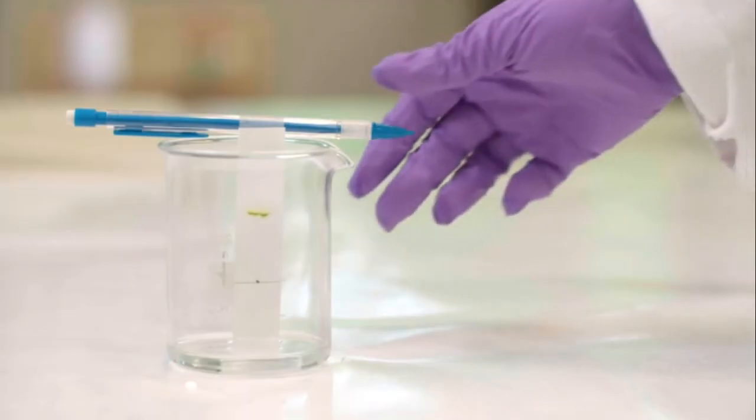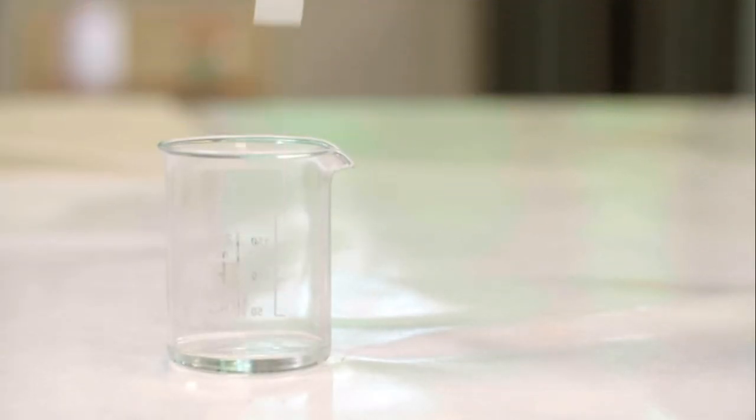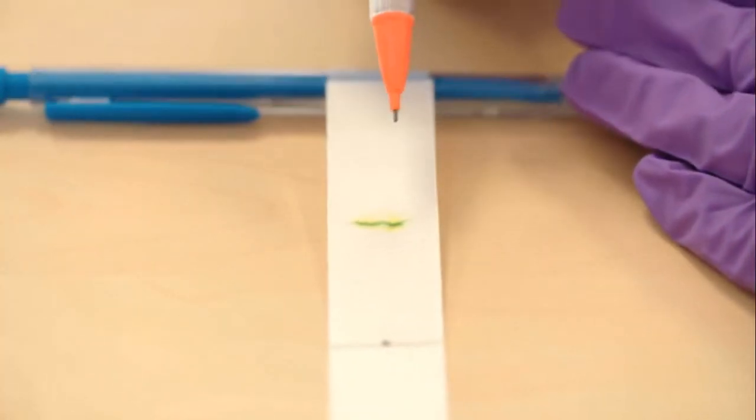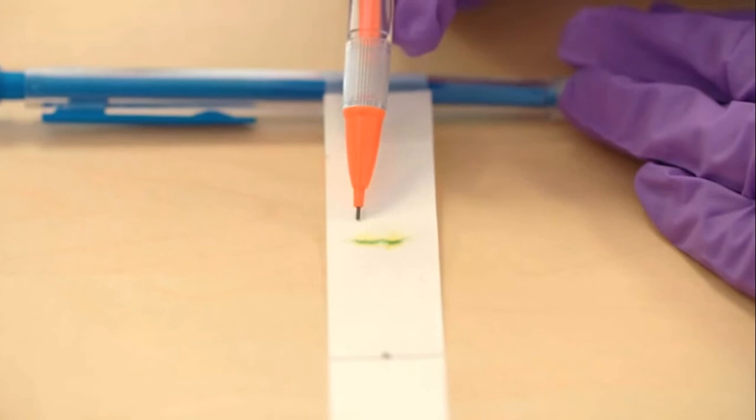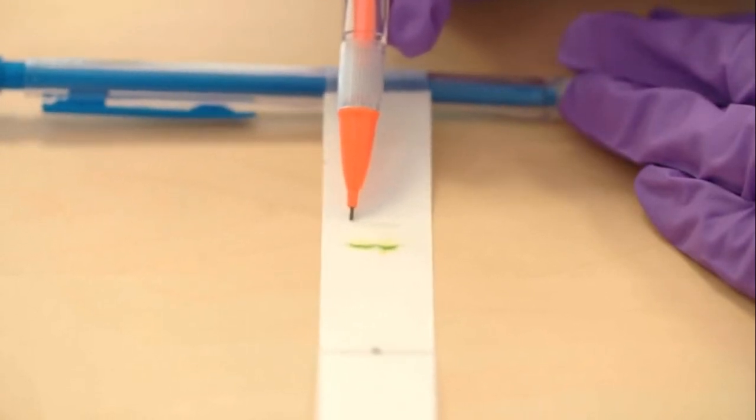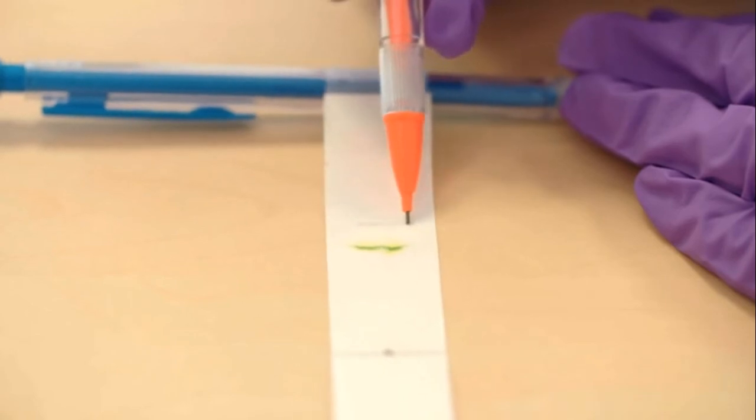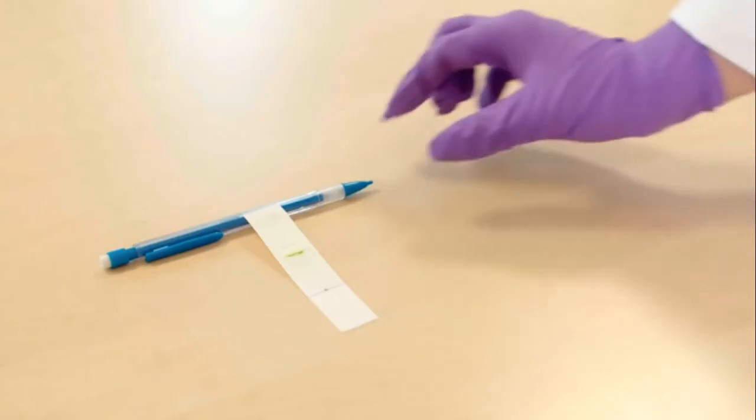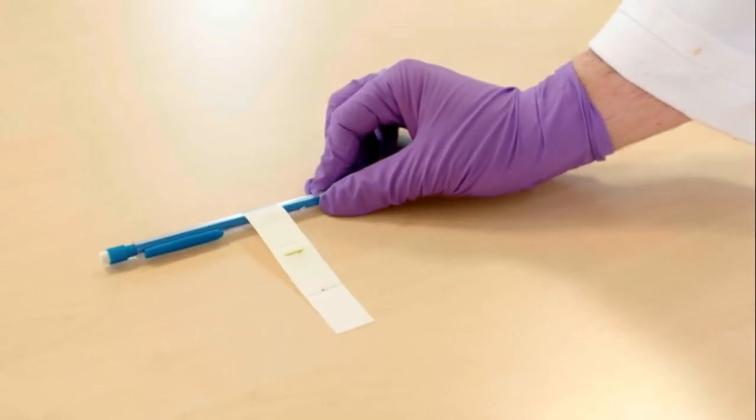When the propanone line approaches the top of the paper strip, it is removed. A pencil is used to mark how far the propanone has moved up the paper. This is called the solvent front. The paper is dried with the hairdryer.